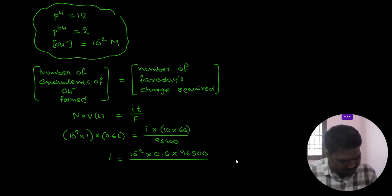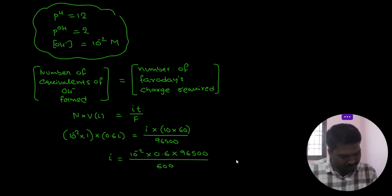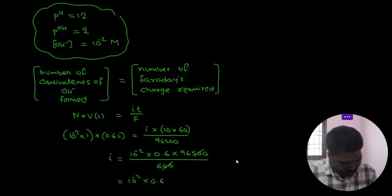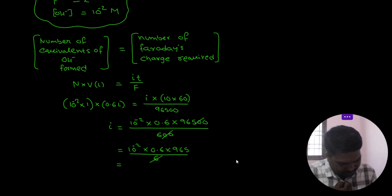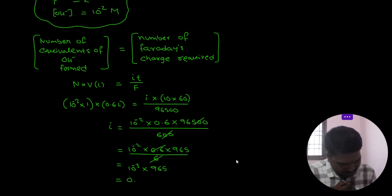Solving for I: I = 10⁻² × 0.6 × 96,500 / 600. Cancelling the double zeros: I = 10⁻² × 0.6 × 965 / 6. The 6 and 0.6 simplify to 0.1, giving I = 10⁻² × 0.1 × 965 = 10⁻³ × 965 = 0.965 ampere.